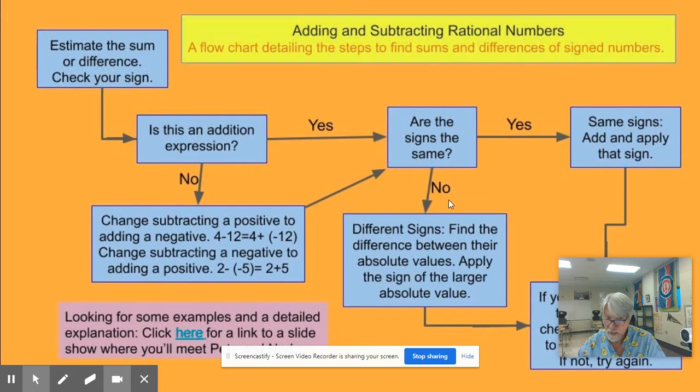And if it is, if the signs are the same, you work it one way. And if the signs are not, you work it a different way. If it's not addition, you change the subtraction to adding the opposite. So subtracting a positive becomes adding a negative. Subtracting a negative, adding a positive.